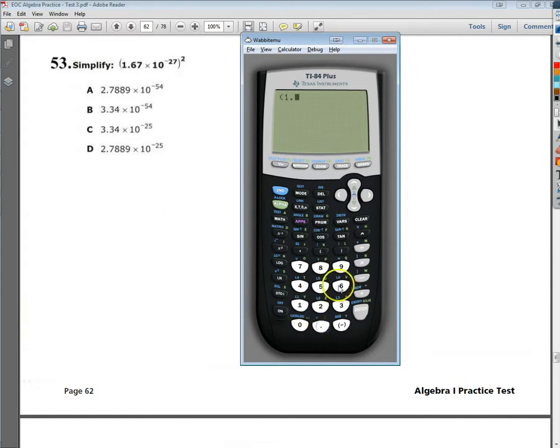So 1.67 times 10 to the negative 27, and then I can raise that to the second power. Hit enter and it gives me 2.7889 e negative 54, so that means 10 to the negative 54, so I'd get A there as well.